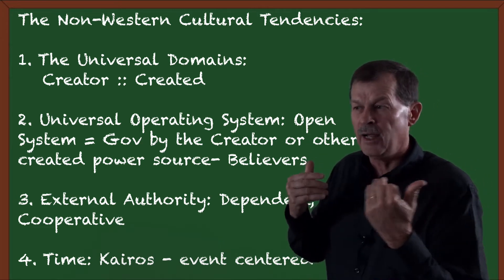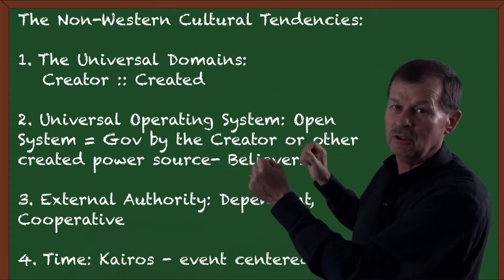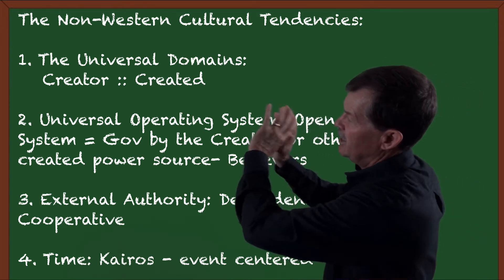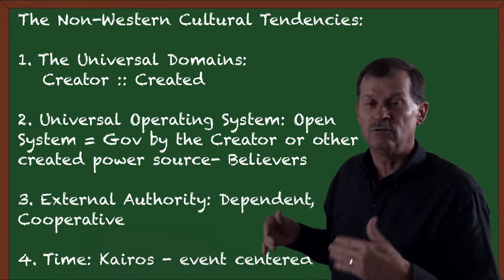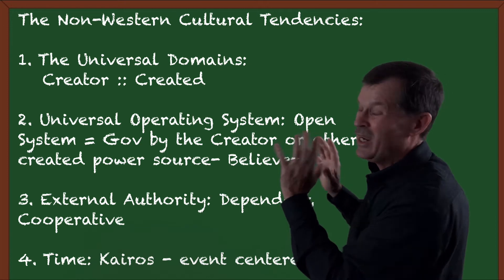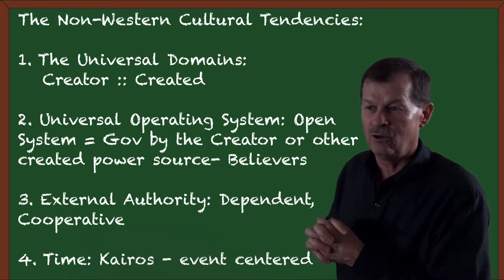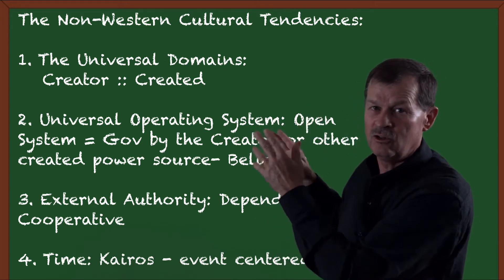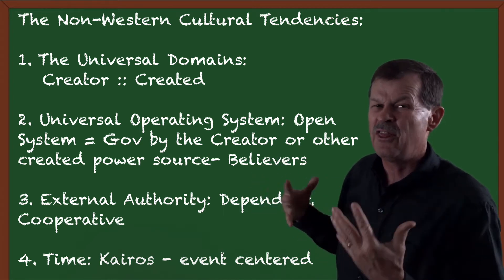In the Western mind, we have separated those realms into the natural world and the supernatural. Our Western science is based on that separation — we're studying only the natural world, and that natural world runs on uniformitarian principles, meaning it has no influence or interference from a non-natural source. The uniformitarian principle states it's all natural sources that cause and make things function. Therefore, there are no miracles — or we don't think of them as miracles.